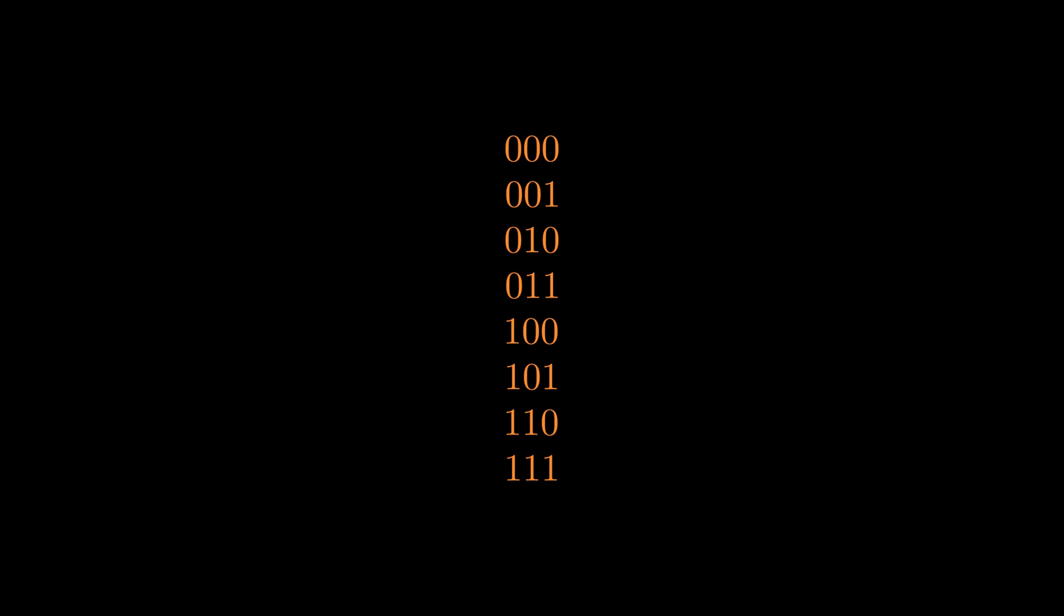By intuition, if someone told us that the highest bit is zero, our space of possible messages is cut down in half. Again, when we get the knowledge that the next bit is also zero, our space of possible messages is cut down in half one more time.